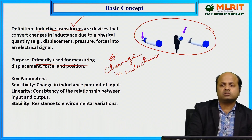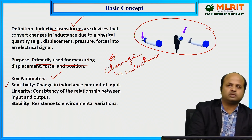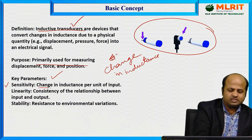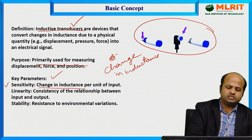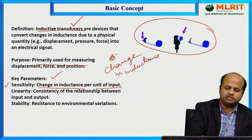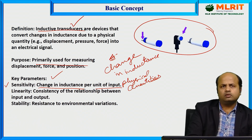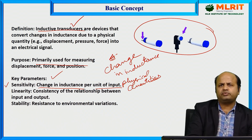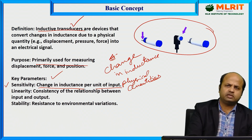Let us understand what are the key parameters involved in the inductive transducer. First is sensitivity. Sensitivity is nothing but the change in inductance per unit change in input, where input denotes the physical quantities — force, pressure, displacement, etc.